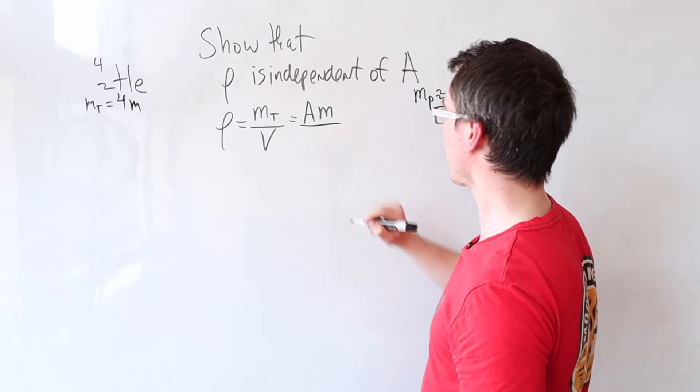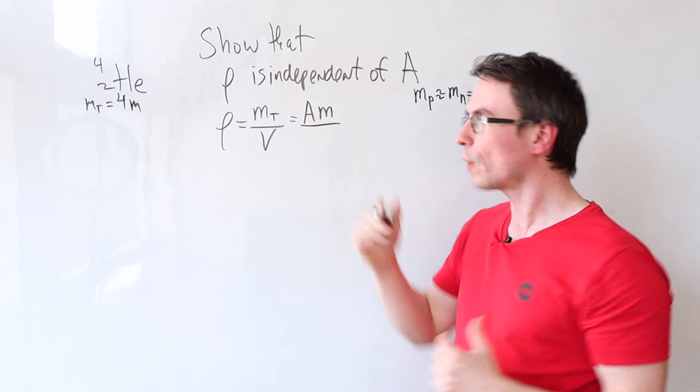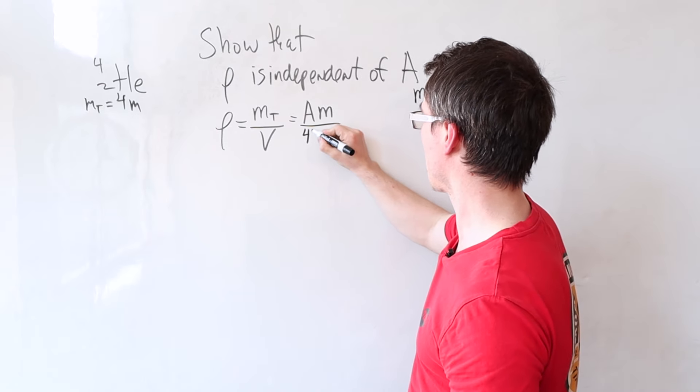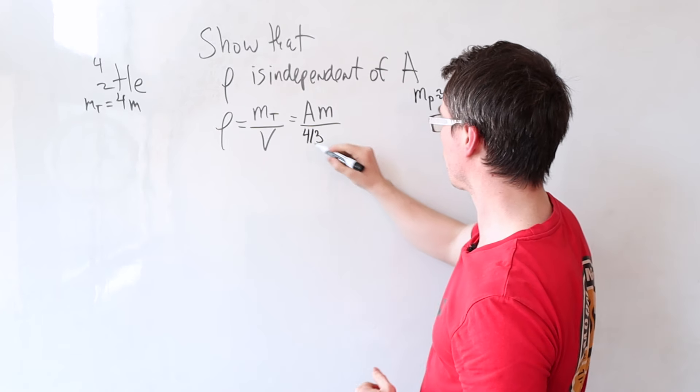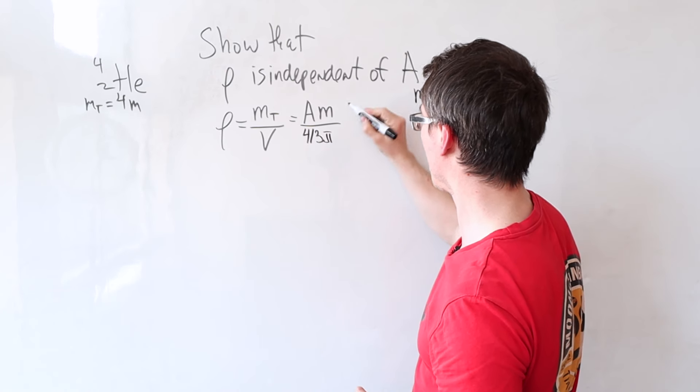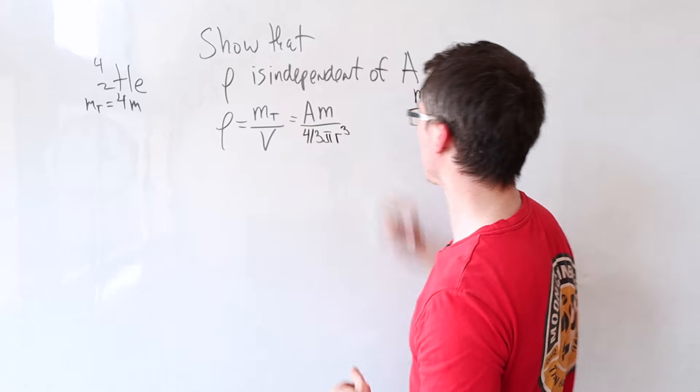Okay, what about the volume? Well, we can assume that the nucleus is spherical, so this will be 4/3 π r³.